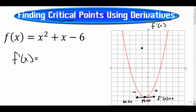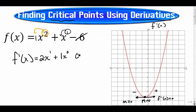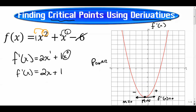If we have a function and we want to find the derivative, we use the power rule: multiply by the exponent in front and reduce the exponent by one. So for x squared plus x minus one, we get two x to the first plus one times x to the zero, which simplifies to two x plus one. The derivative of a constant is zero.